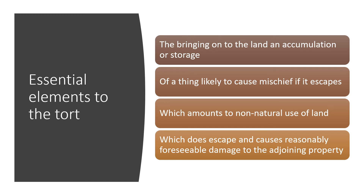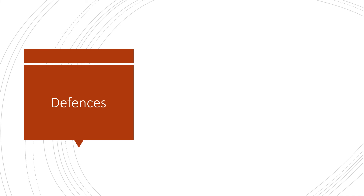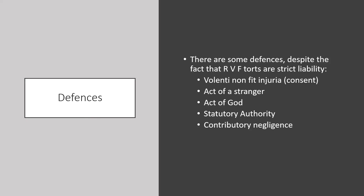Those are the key elements of the tort — make sure you apply each and every one to any particular scenario. There is a separate video on application. Don't forget also to consider defences. Some defences will be familiar from negligence and occupiers' liability, but there are some specific to nuisance claims and Rylands and Fletcher torts. The defences are: volenti (consent), the act of a stranger, an act of God, statutory authority, and contributory negligence.